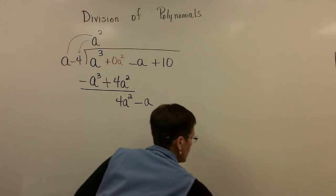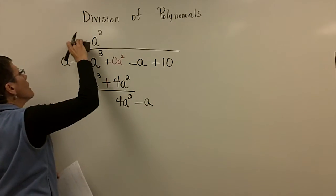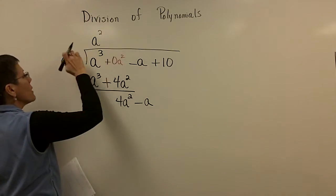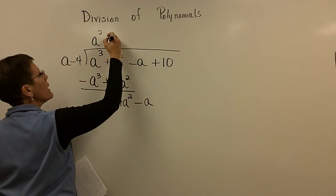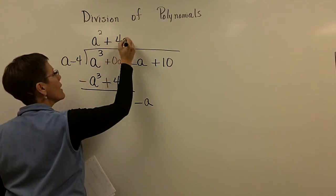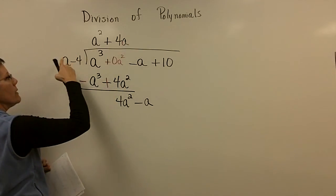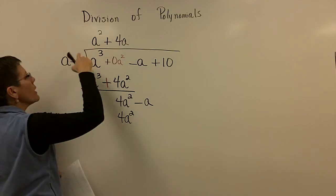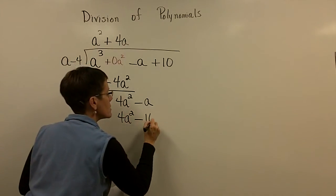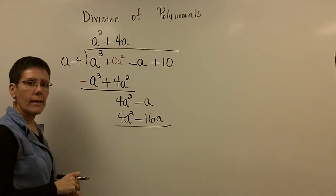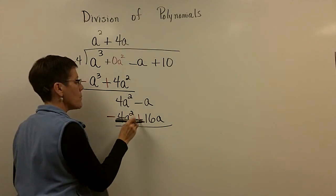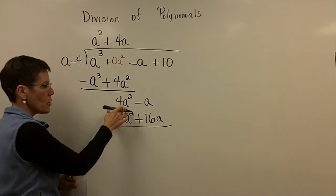So I need now to put a term up here that when I multiply by a I get 4 a squared. And that has to be a positive 4 a. Because 4 a times a is 4 a squared. And 4 a times a minus 4 is a minus 16 a. And I change my signs because I'm subtracting. So I add the opposite. The a squared terms of course are going to disappear.